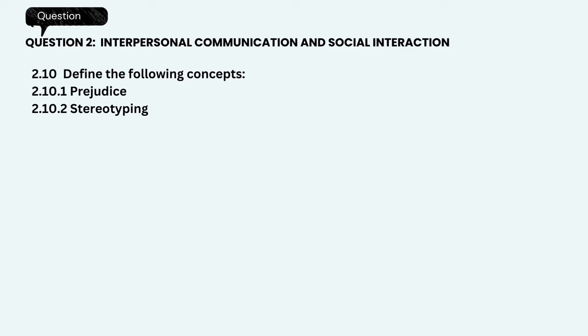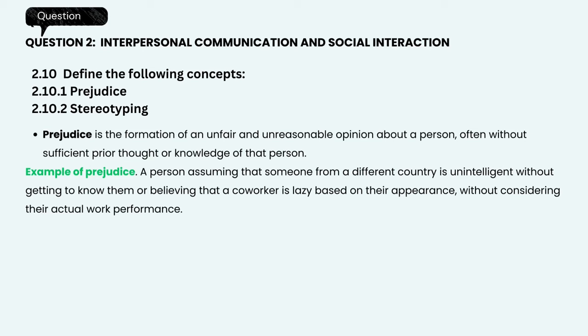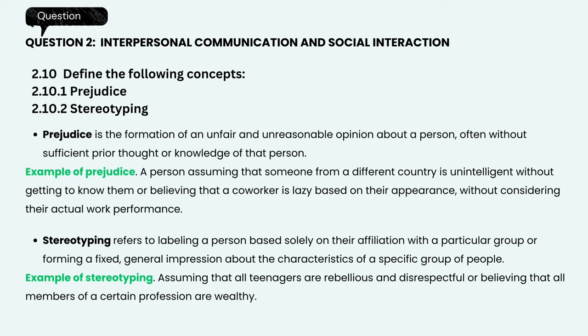Define the following concepts: 1. Prejudice and 2. Stereotyping. Prejudice is the formation of an unfair and unreasonable opinion about a person, often without sufficient prior thought or knowledge of that person. For example, assuming someone from a different country is unintelligent without getting to know them, or believing a co-worker is lazy based on their appearance without considering their actual work performance. Stereotyping refers to labelling a person based solely on their affiliation with a particular group, or forming a fixed, general impression about the characteristics of a specific group of people. For example, assuming all teenagers are rebellious and disrespectful, or believing all members of a certain profession are wealthy.